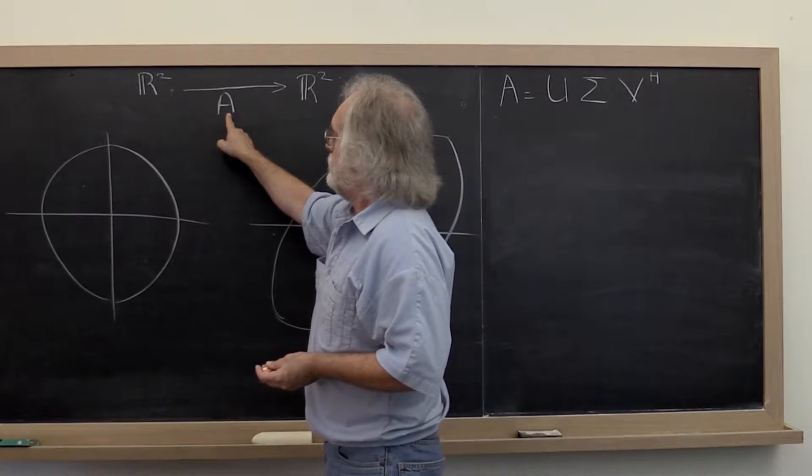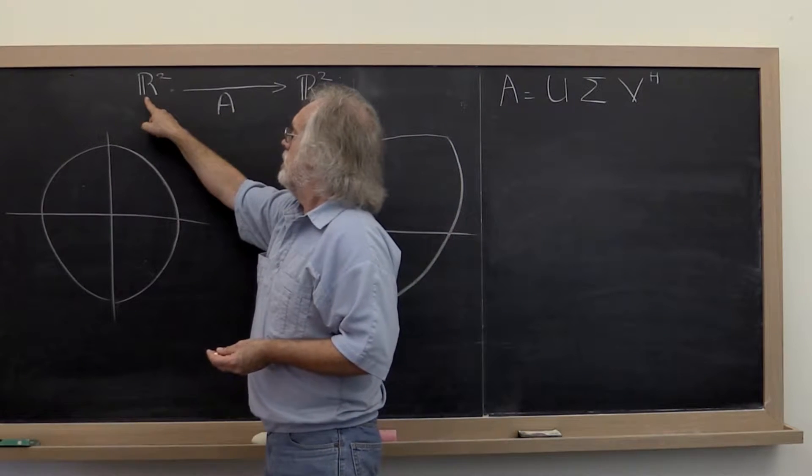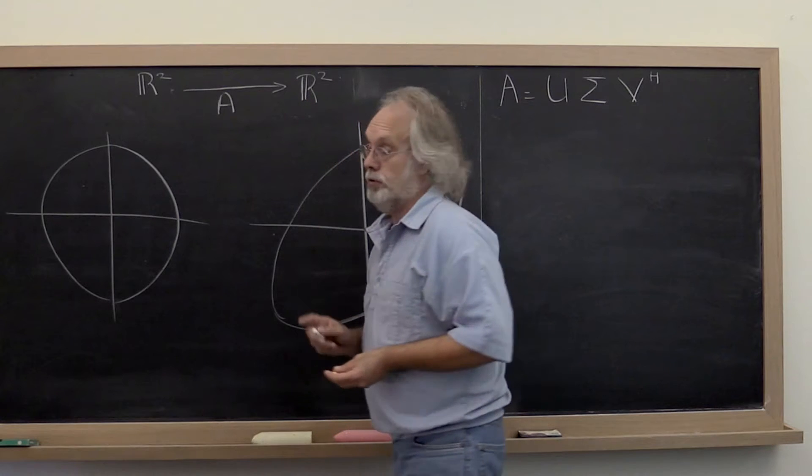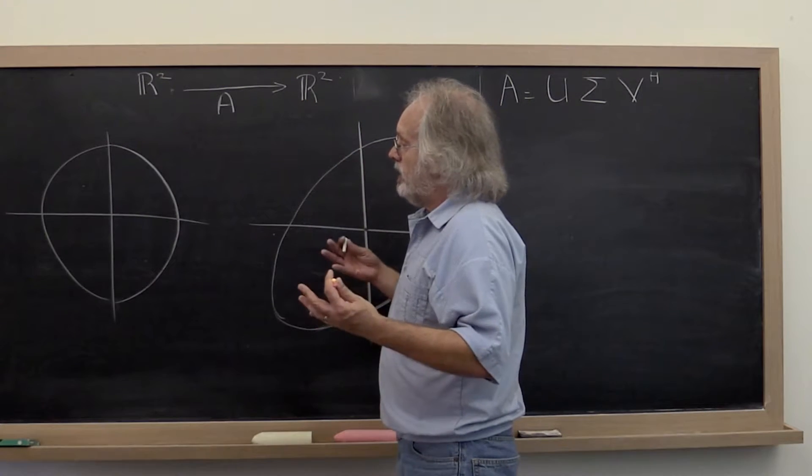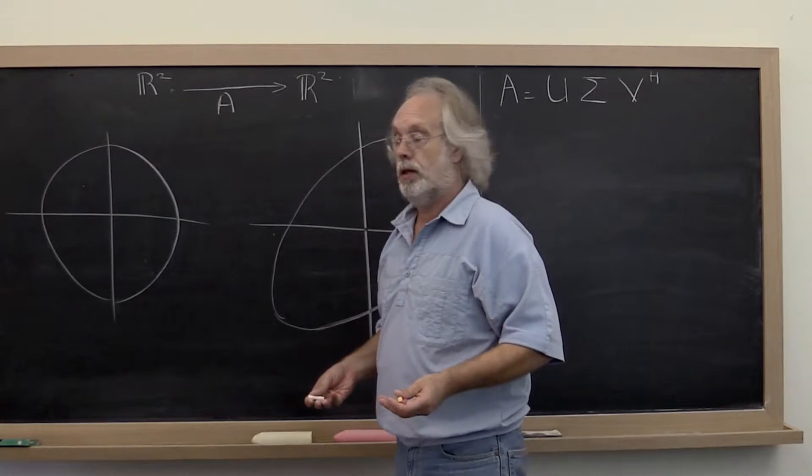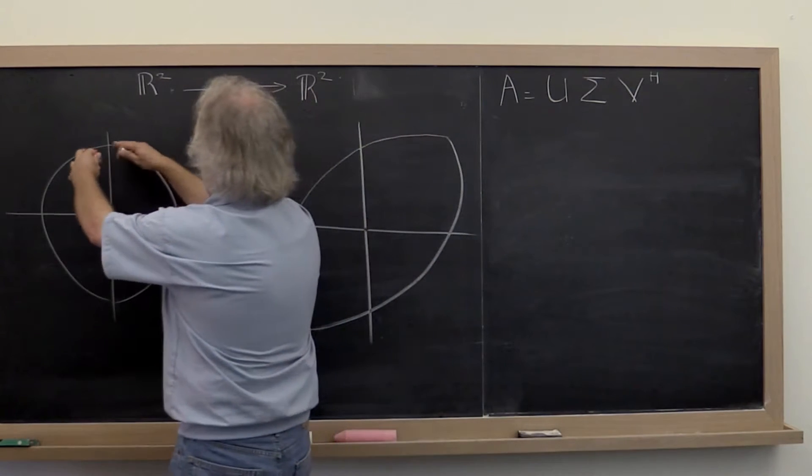That's a 2 by 2 matrix that takes vectors from R2 to R2. And we've already talked a lot about the unit ball. So this here is the unit ball.